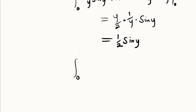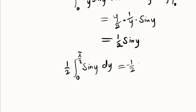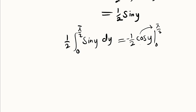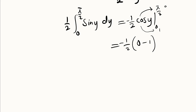We have (1/2) times the integral from 0 to π/2 of sin(y) dy. Integrating sin(y) gives -cos(y), so we get (1/2)·[-cos(y)] from 0 to π/2. Since cos(π/2) = 0 and cos(0) = 1: (1/2)·[(-0) - (-1)] = (1/2)·(1) = 1/2. Our final answer is 1/2.